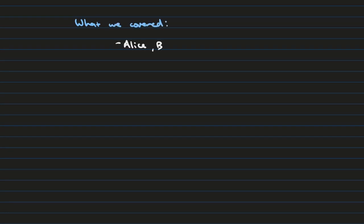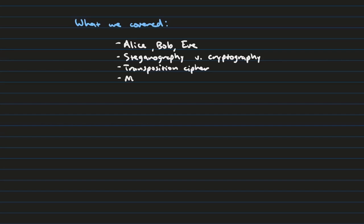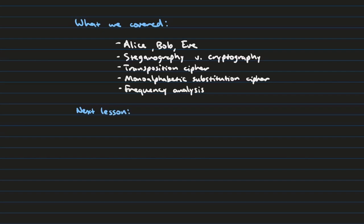As a recap, here's what we covered today. First, we discussed the notion of Alice and Bob as well as their friend Eve, the eavesdropper. Next, we looked at steganography versus cryptography, and took a deep dive into cryptography, looking at transposition ciphers as well as the monoalphabetic substitution cipher. Finally, we looked at frequency analysis, which helps us understand how to crack the monoalphabetic substitution cipher. Next lesson, we're going to look at the polyalphabetic substitution cipher, which does not suffer from the same flaws as the monoalphabetic substitution cipher.